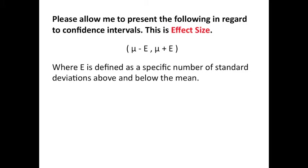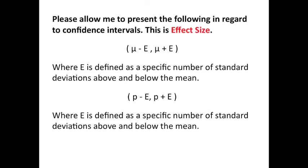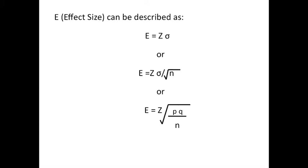Please allow me to present a new term called effect size. Effect size is the amount above or below the mean that we use to trap a specific percentage of data. You can trap on each side of mu, you can also trap on each side of p. So effect size is a new term, and both mu and p are measures of central tendency.